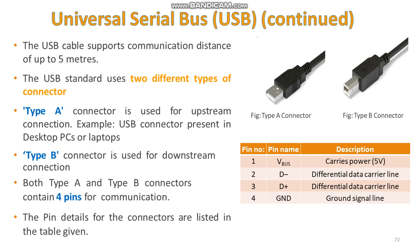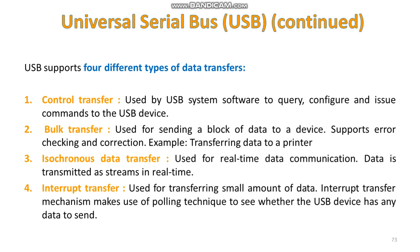Type A is used for upstream connection and Type B for downstream connection. An example of Type A is the USB connector present in desktop PCs or laptops. Both Type A and Type B connectors contain four pins, whose functions are shown in the table. USB supports four different types of data transfer: control transfer, bulk transfer, isochronous data transfer, and interrupt transfer.